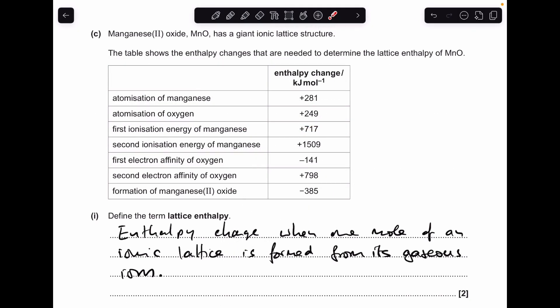Moving on to part C, the definition for the term lattice enthalpy is the enthalpy change when one mole of an ionic lattice is formed from its gaseous ions.